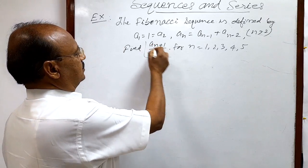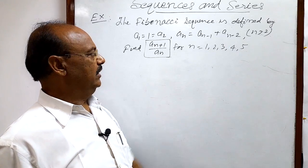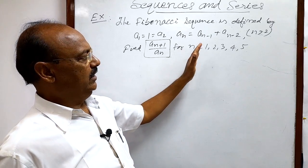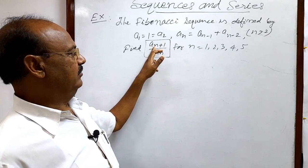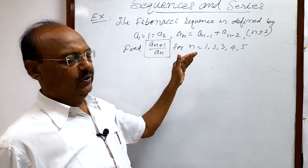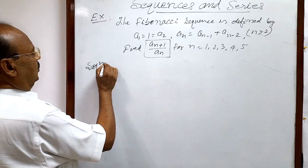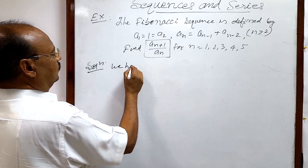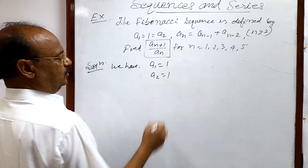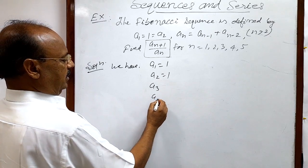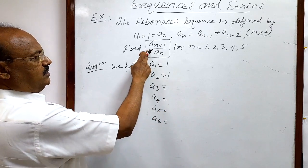We have to find out this value for all values of n from 1 to 5. It will be convenient to first find out a1, a2, a3, a4, a5, and a6 — because when you put n = 5, it becomes a6. So let us find a1 through a6. a1 and a2 are already given, so we have a1 = 1 and a2 = 1.